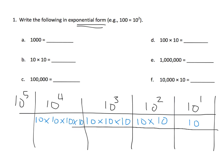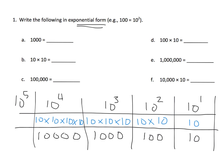We can grab a calculator to make our life go a little bit quicker. So 10 simply means 10. And then 10 times 10 — we might know that from third grade — is 100. Using a calculator, 10 times 10 times 10 is 1,000. And 10 times 10 times 10 times 10 equals 10,000.